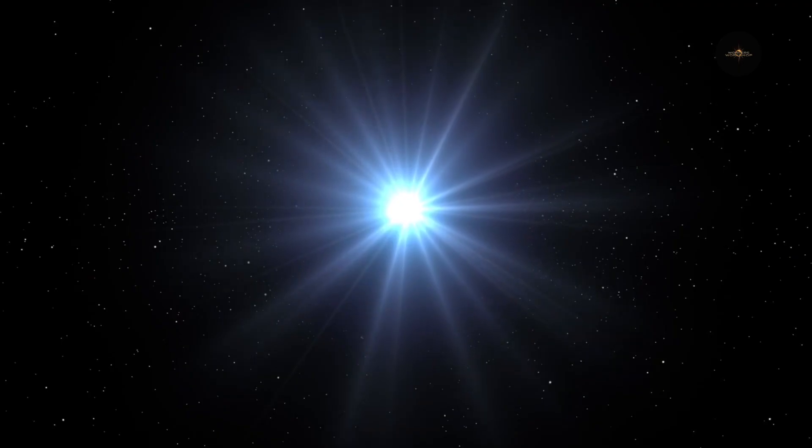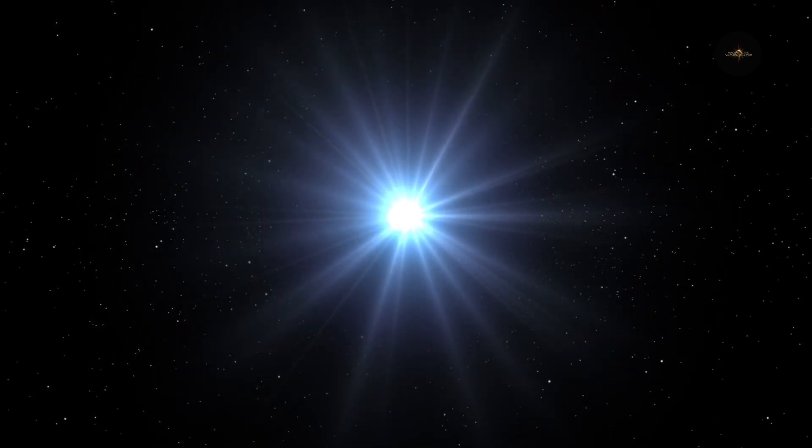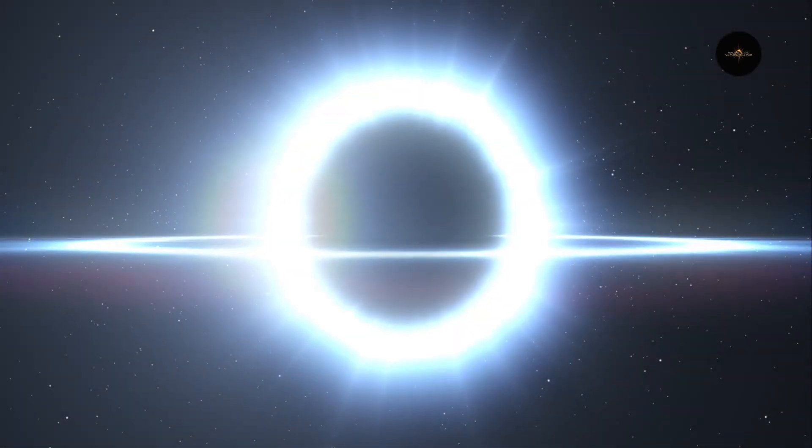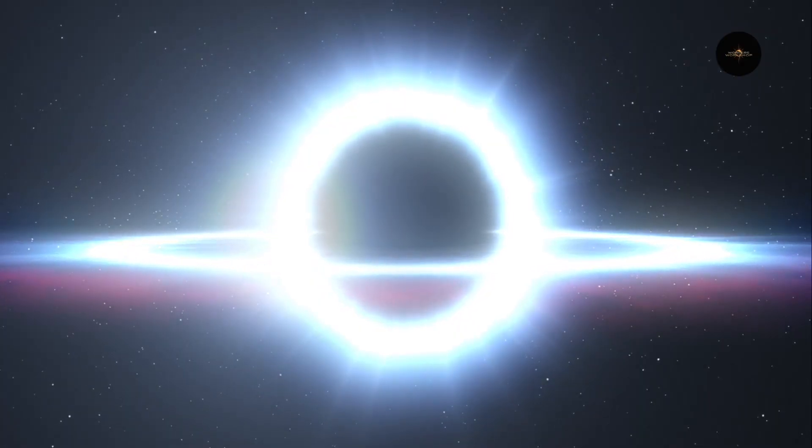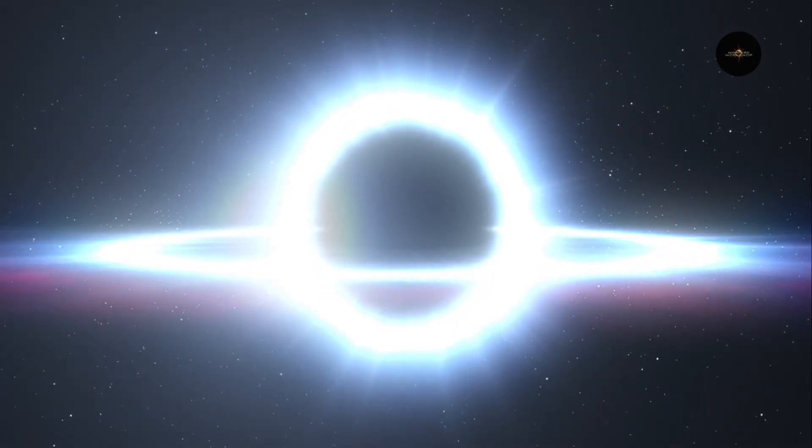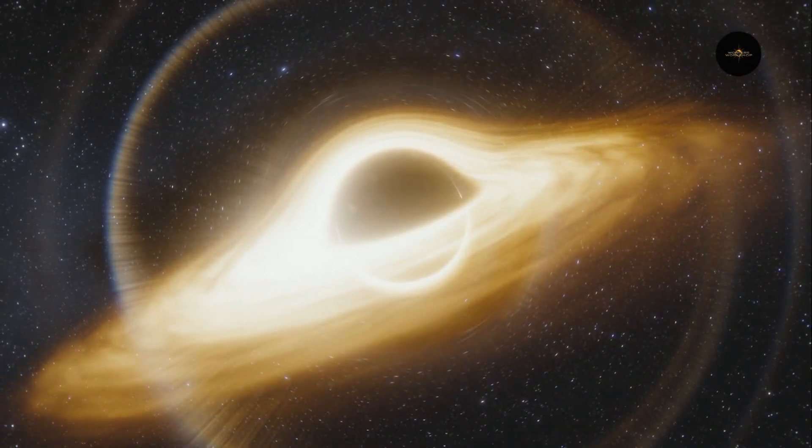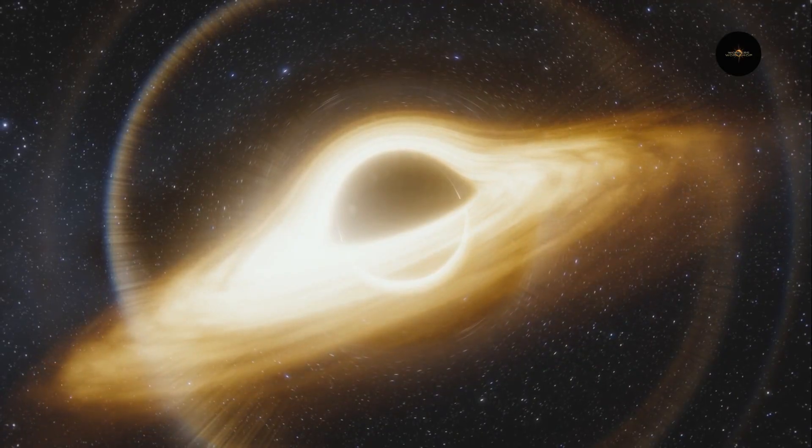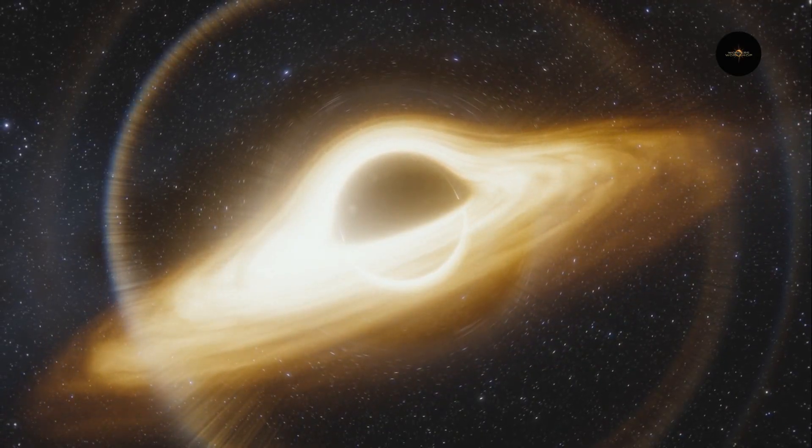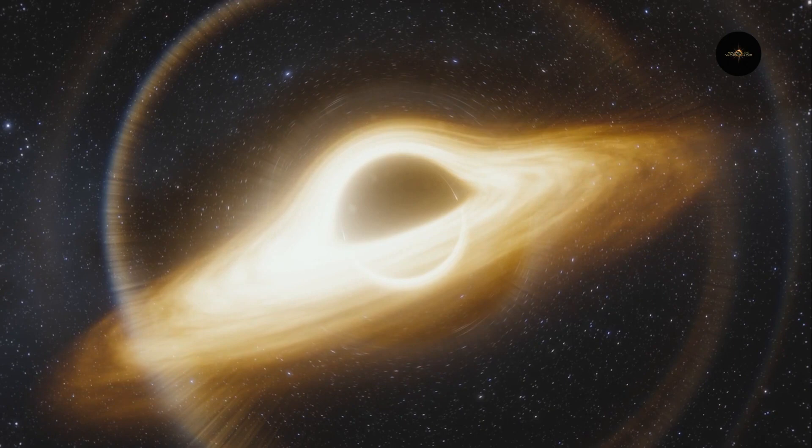It is thought that these black holes could have grown not only through the collapse of stars but also by acquiring matter from nearby sources, such as gas and interstellar dust, or perhaps through mergers with other black holes. This accretion process, which has been observed in various quasars, could be the key to understanding how some black holes can reach such extraordinary sizes in cosmologically short timescales.